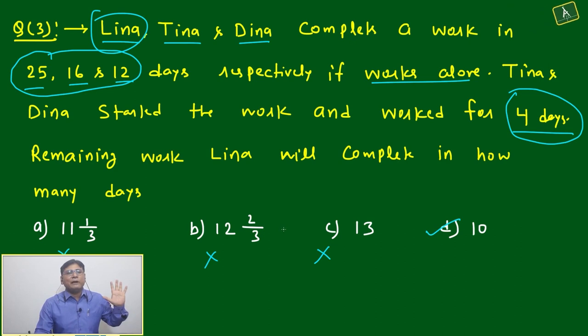Then 50% work is 12.5 days. Work is less than 50%, so you can just reject option A, option B, option C - all are more than 12. If Lena is taking 12.5 days to complete 50% of work, then 40% of work he must be taken less than 12 days, less than 11 days. All A, B, C is out.